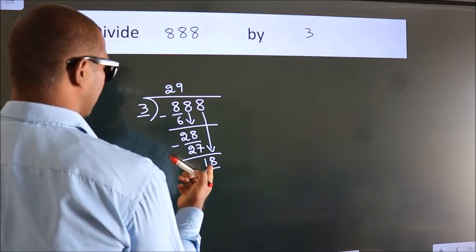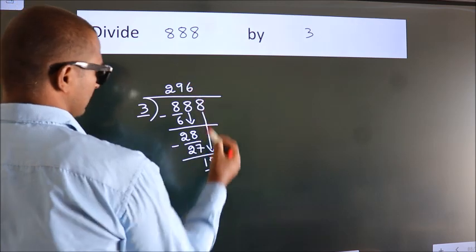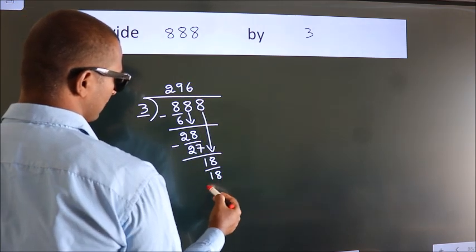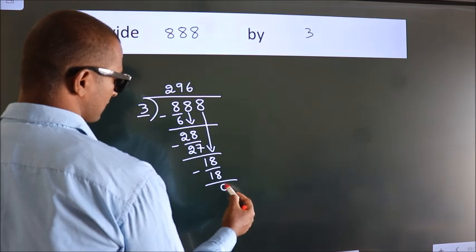When do we get 18 in the 3 table? 3 times 6, 18. Now we subtract. We get 0.